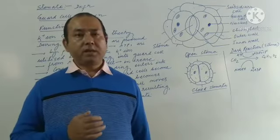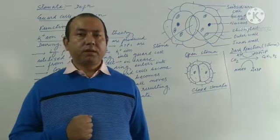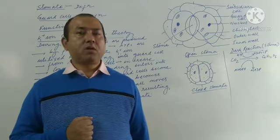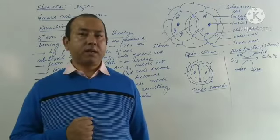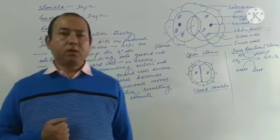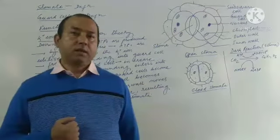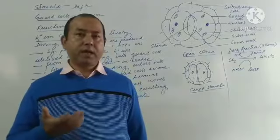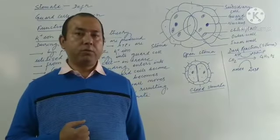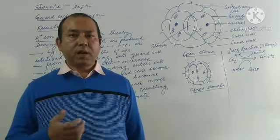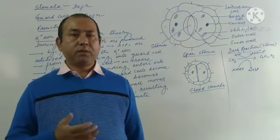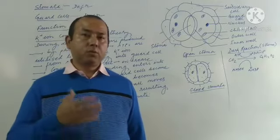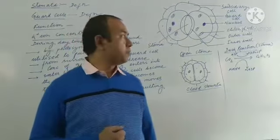Light reaction is carried out in the presence of sunlight, whereas dark reaction does not require any sunlight. That is why it is also called the light-independent phase or biosynthetic phase, because during this phase carbon dioxide is fixed and converted into glucose — that is, glucose food molecule is produced.